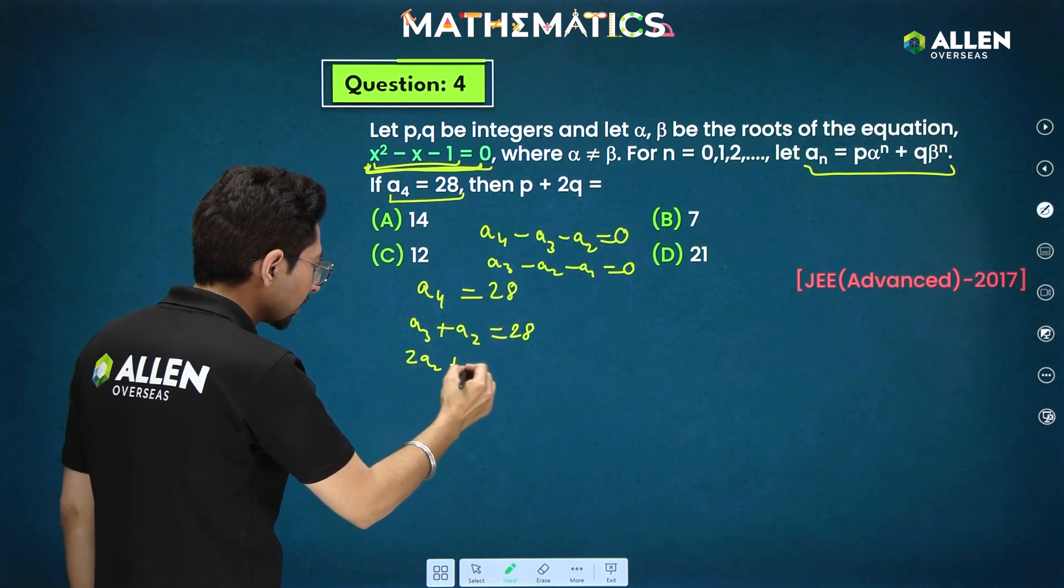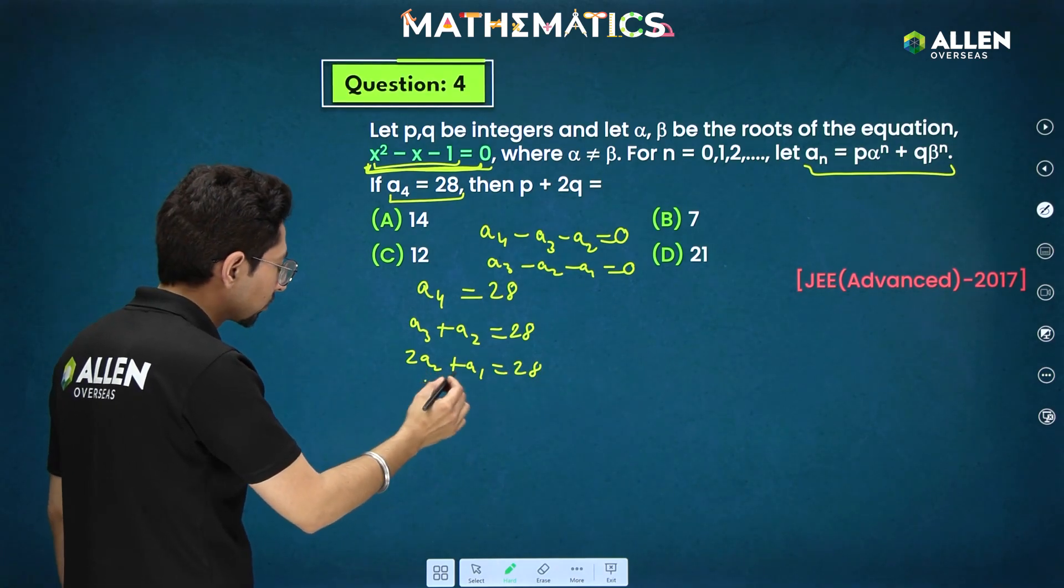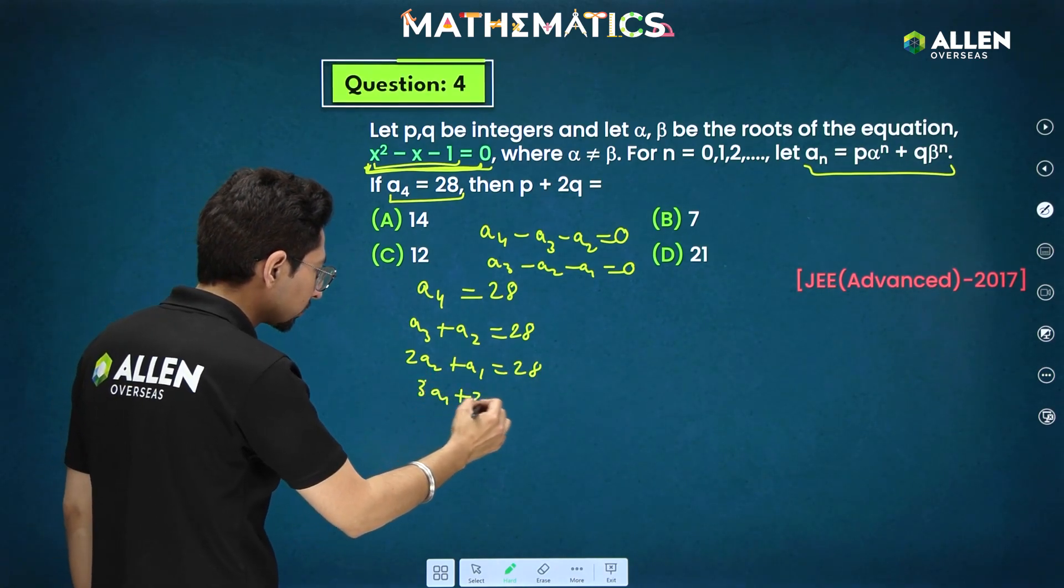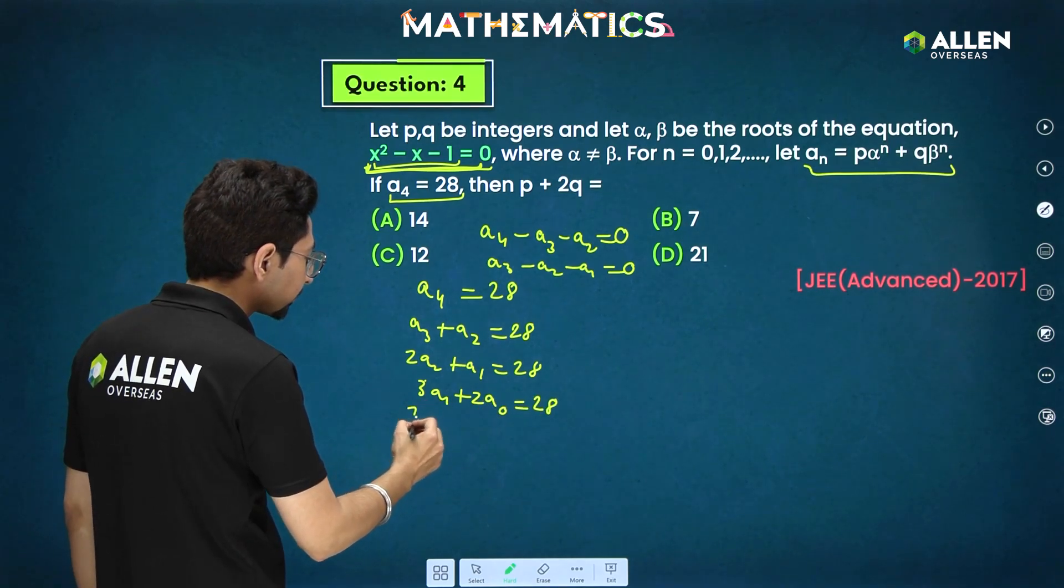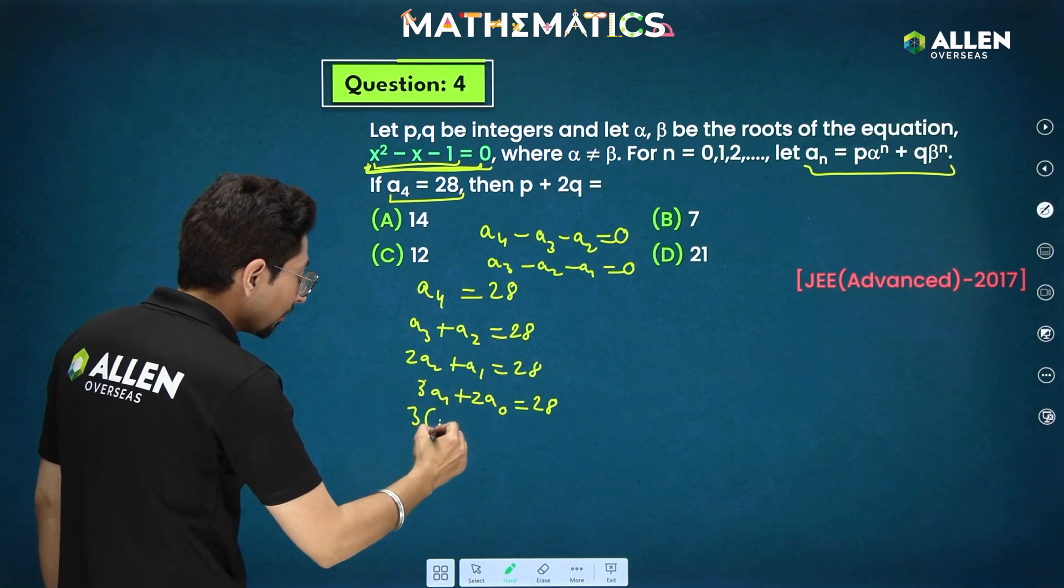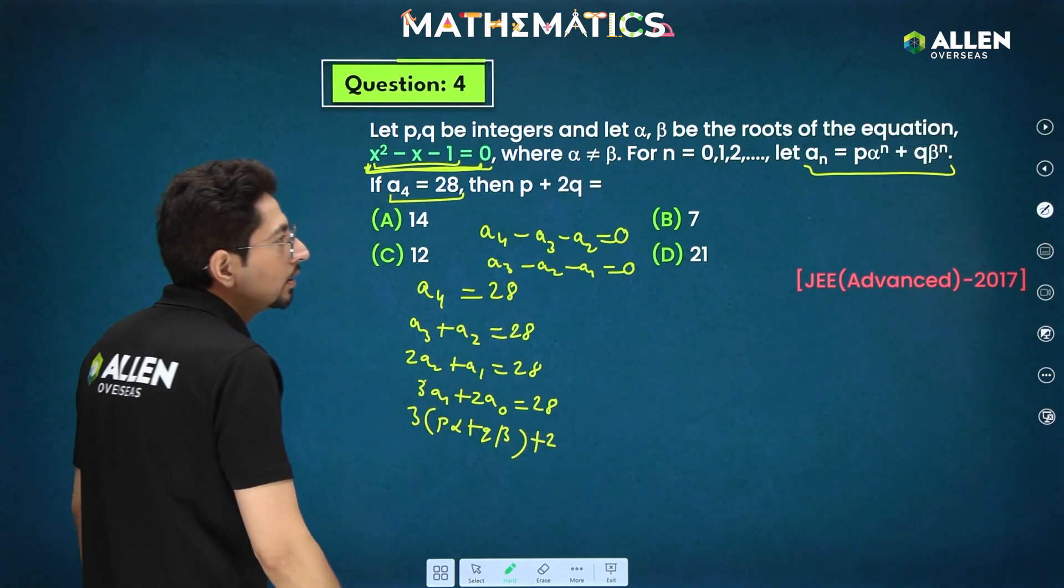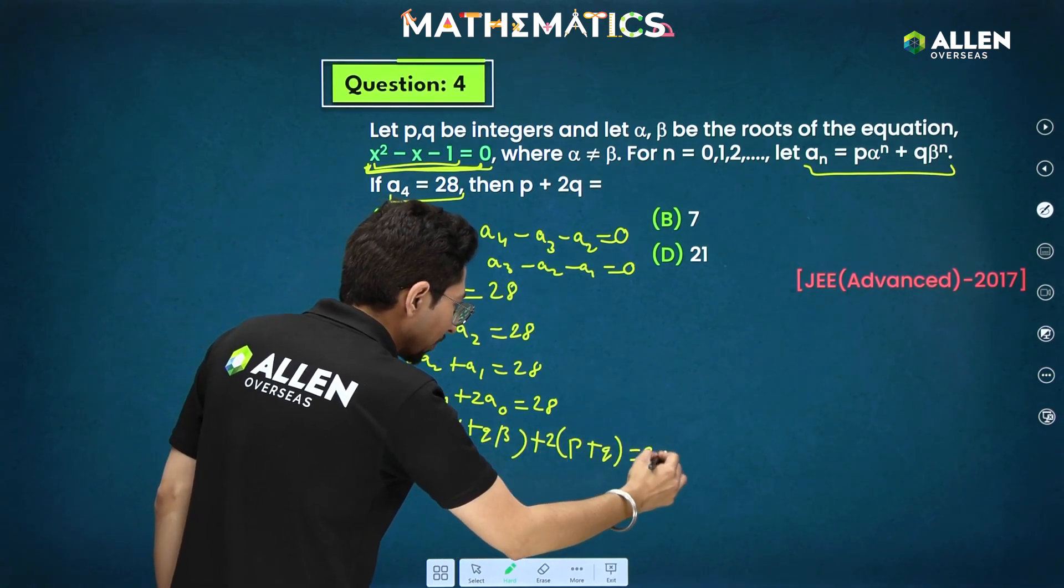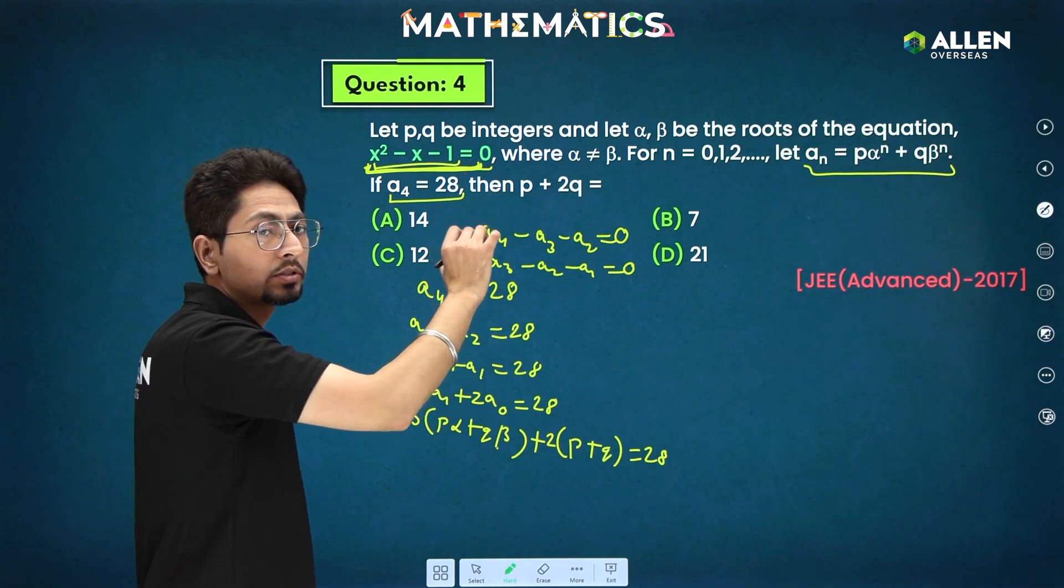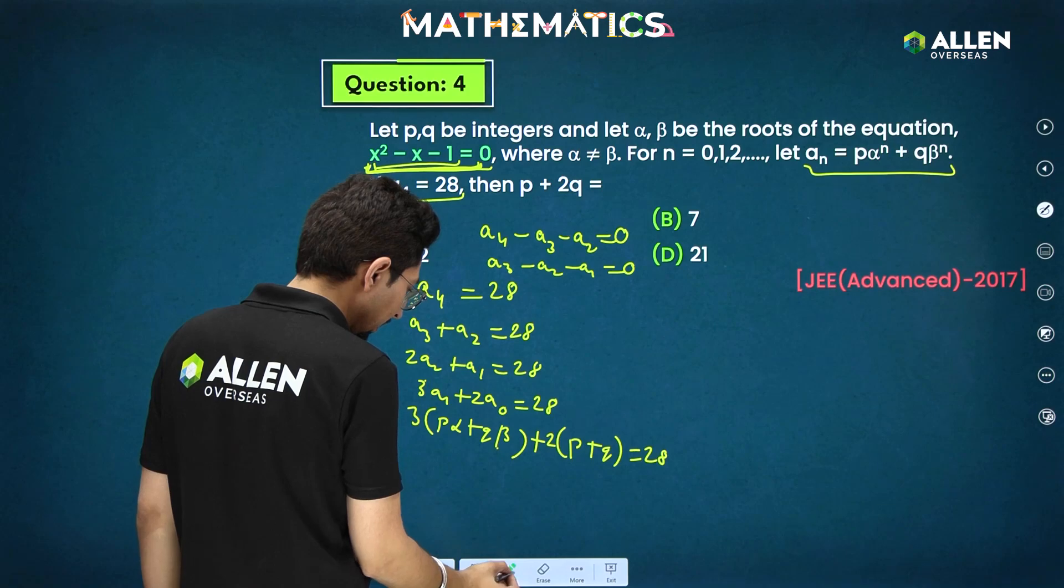This will be 2a2 plus a1 is 28. Similarly a2 will be a1 plus a0. So this will be 3a1 plus 2a0. Now you can directly place the values here. a1 will be p alpha plus q beta and a0 will be p plus q. Okay. What else we require? This has roots alpha and beta. So what will be sum of roots from here?